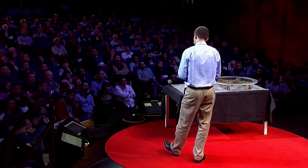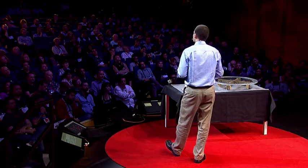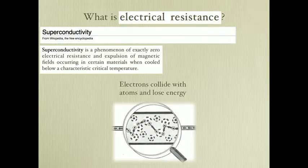A superconductor is defined by two properties. The first is zero electrical resistance, and the second is the expulsion of magnetic field from the interior of the superconductor. Electricity is the flow of electrons inside the material. These electrons, while flowing, collide with the atoms, and in these collisions they lose a certain amount of energy.